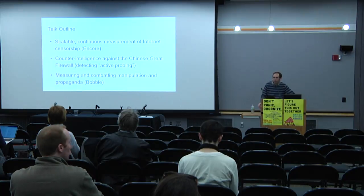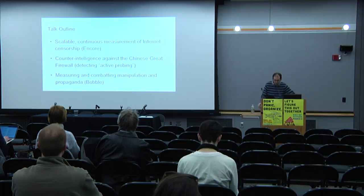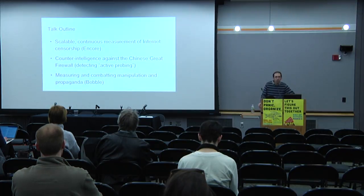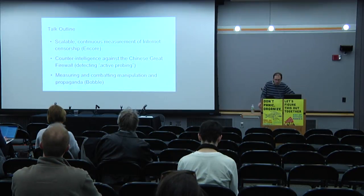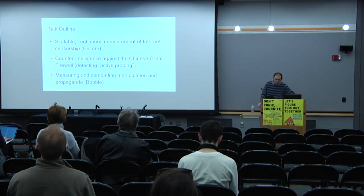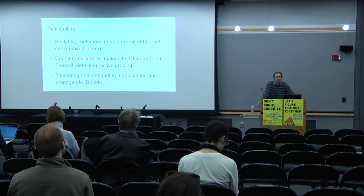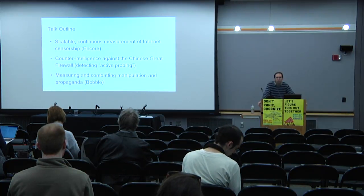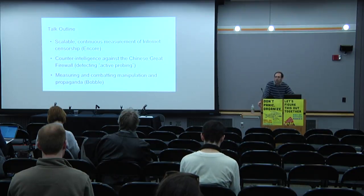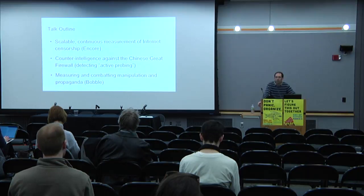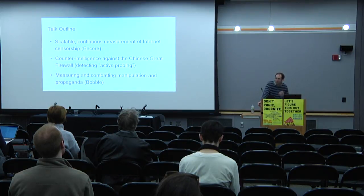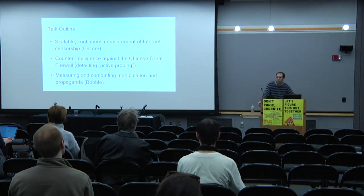This gets into things we're studying in the computer science department at Princeton. I'm going to talk about one specific way of doing scalable continuous measurement of internet censorship. When we go back to those numbers I first presented — the colored map — how did the OpenNet Initiative get those numbers? Typically what they do is send activists, people like you and me, into those countries carrying laptops. They plug into the network, try to access some websites, and based on what they get back, they write a report.